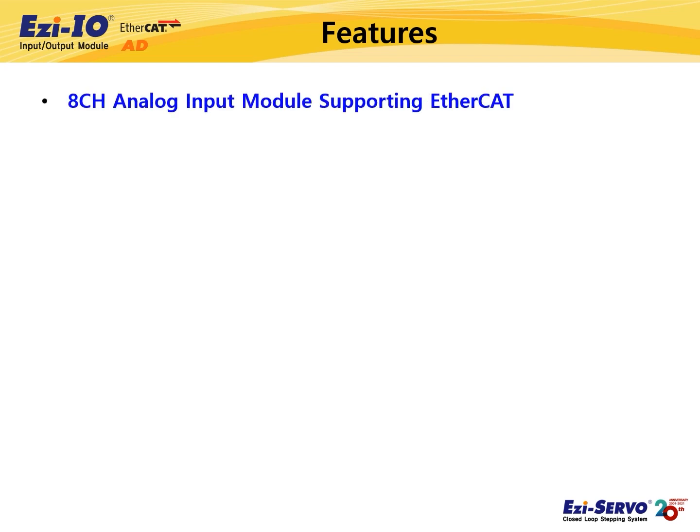Now let's check the features of Easy IO EtherCAT-AD products. Easy IO EtherCAT-AD is an eight-channel analog input module which uses the EtherCAT network. It supports CiA 401 profile, which is a device profile for IO modules, and can be connected to an EtherCAT master without any topology limitation.